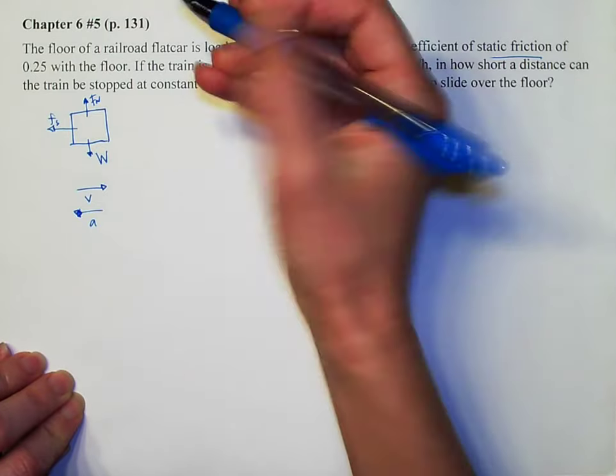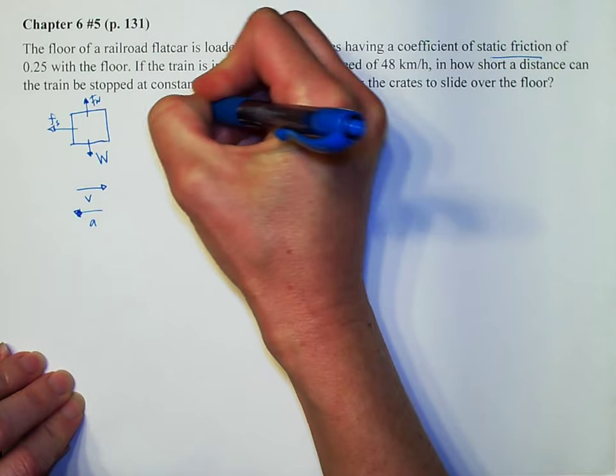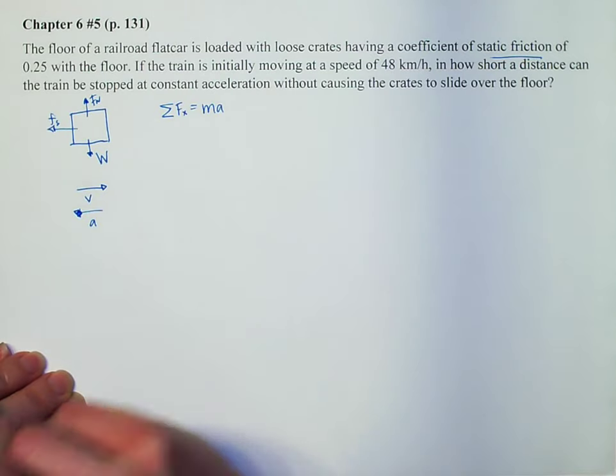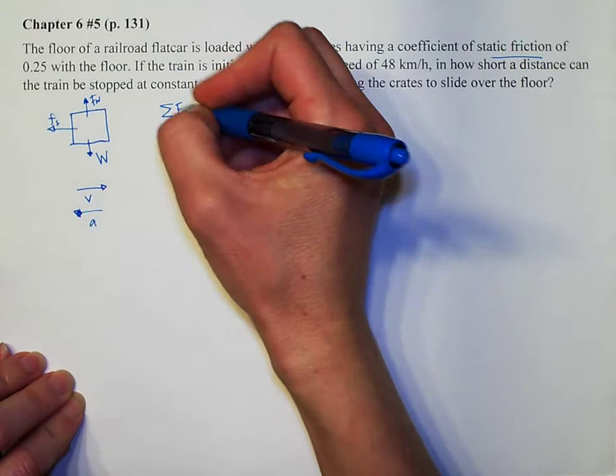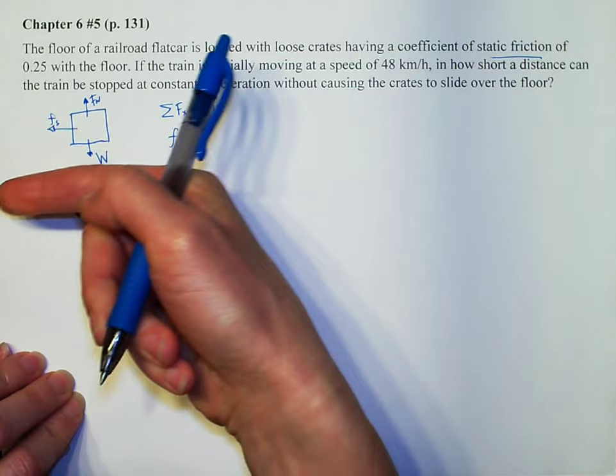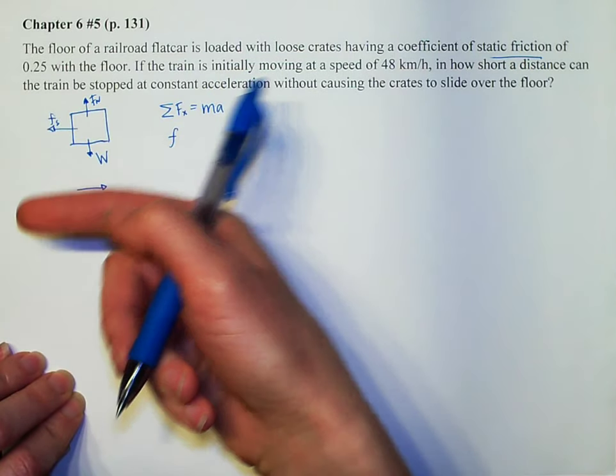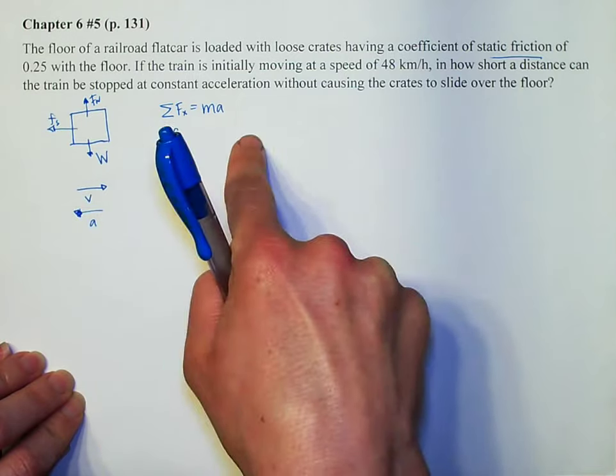Alright, let's sum our forces. So sum of the forces in the x direction equals mass times acceleration. And so the sum of the forces, the only force we have, and I'm going to have that be my positive direction so that my force can be in that way and my acceleration can be that way so we don't have to have a negative and a negative.